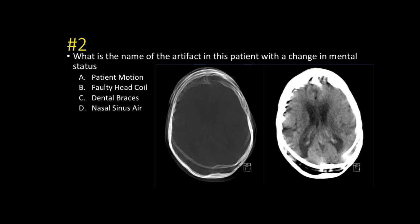Question number two: what is the name of this artifact in the patient with the change in mental status? It's another easy one — this is patient motion artifact. The CAT scan is blurred and ghosted because the patient was moving around a lot. Another bread-and-butter easy case.